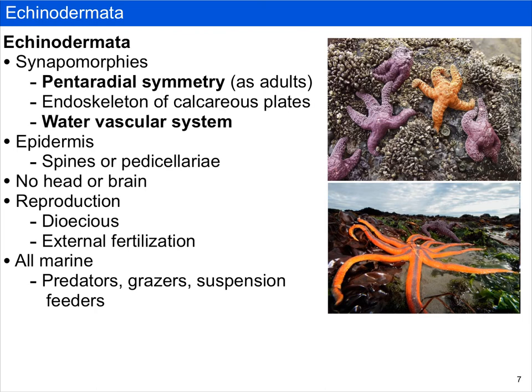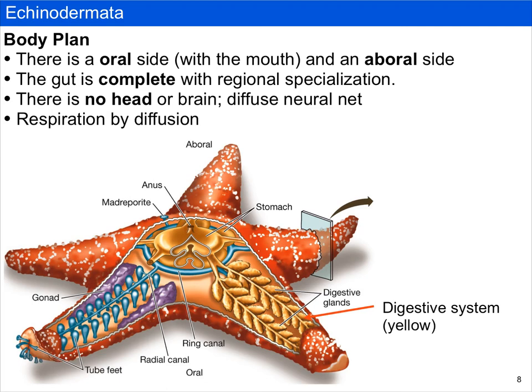The body plan of a typical echinoderm has two sides: an oral side — which, if you think of a sea star, is the bottom side where the mouth is — and an aboral side where we find the anus. The gut is complete, although regionally specialized with a number of different kinds of glands. There is no head or brain, with a diffuse neural net, and respiration is by diffusion. Echinoderms also have a two-part stomach: part of the stomach on the aboral side also has an anus, and there is a part of the stomach that can be extended outside of the body — we'll talk more about that when we get to feeding.